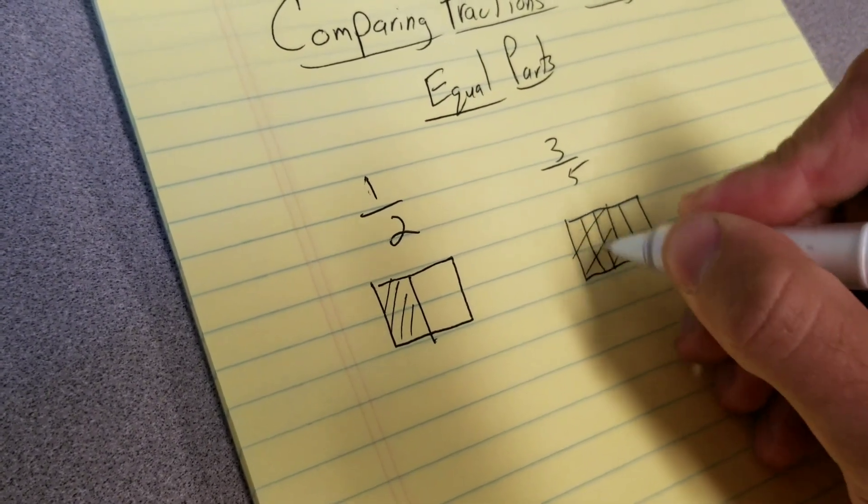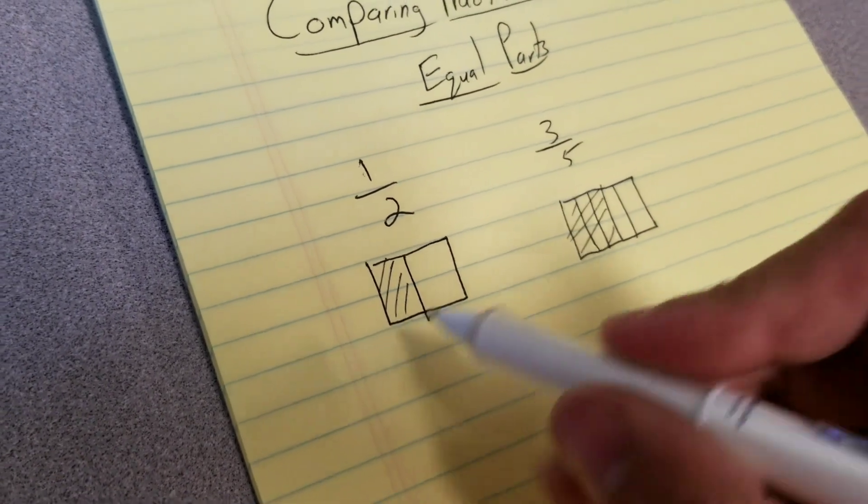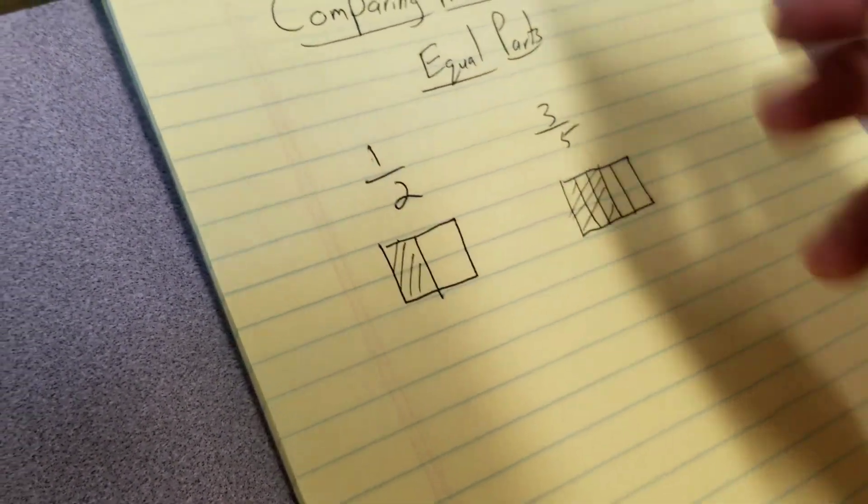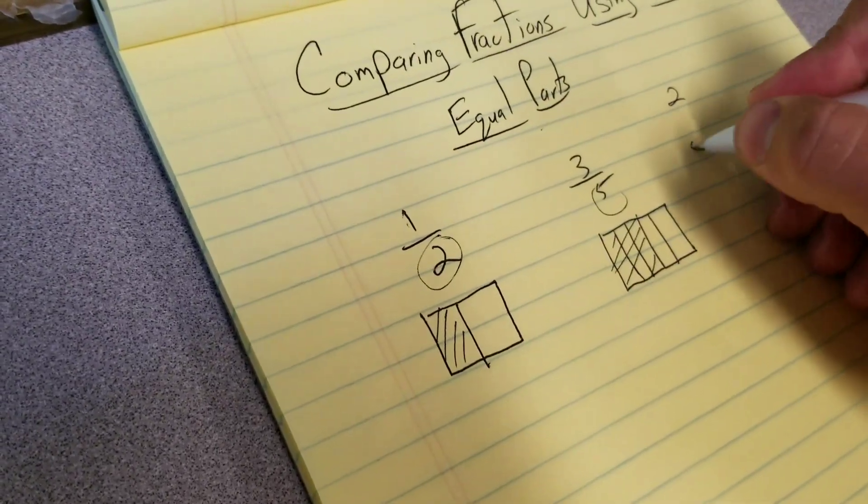So this one's out of five pieces, this one's out of two pieces—definitely not equal parts. The way we're going to use least common multiples is we're going to take our denominators, 2 and 5, and find the multiples of those numbers.